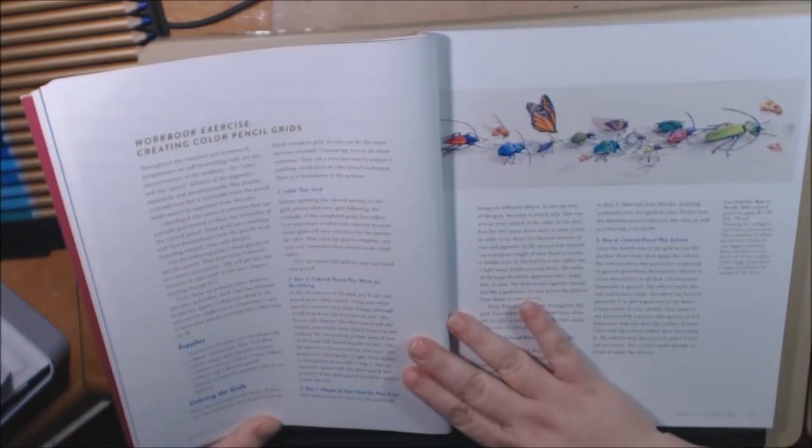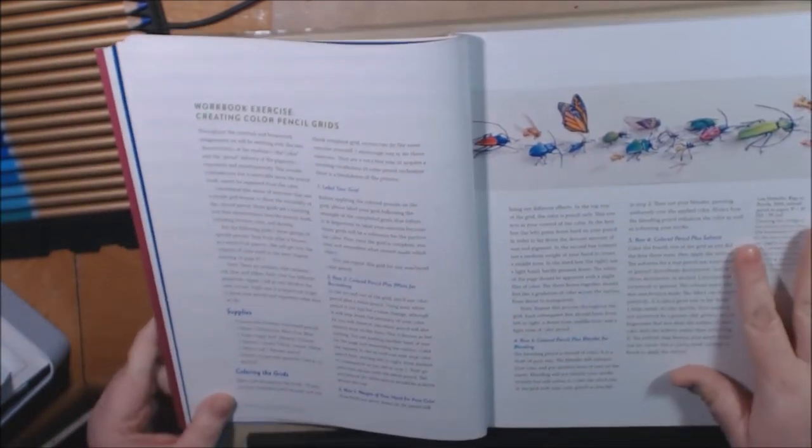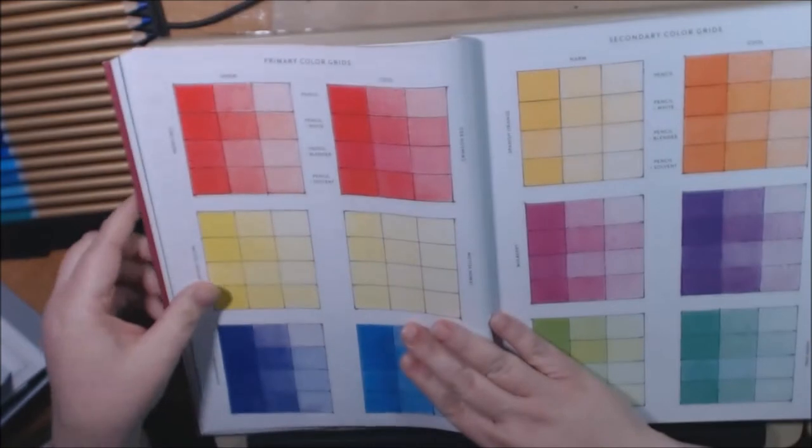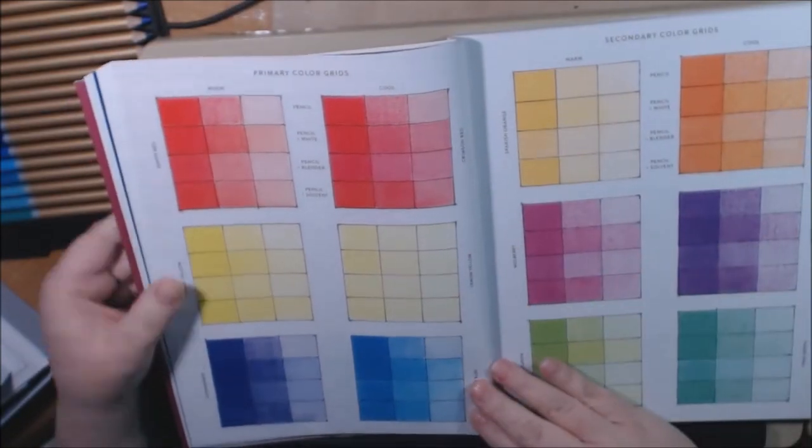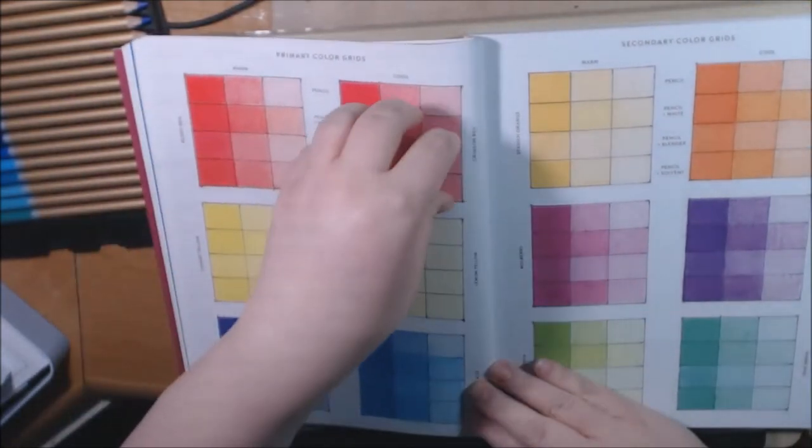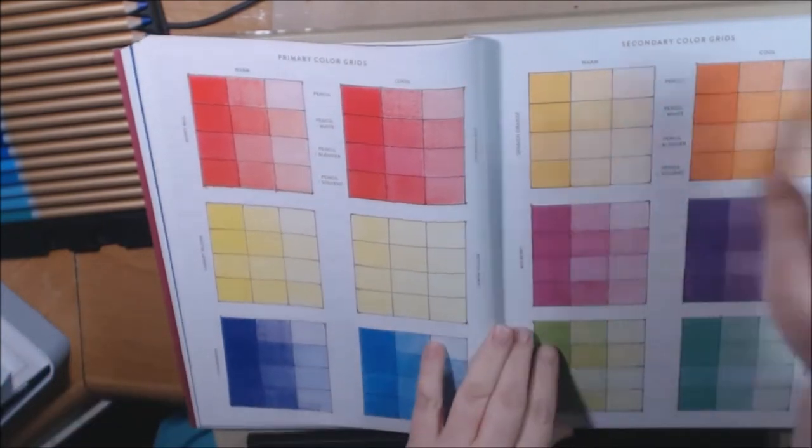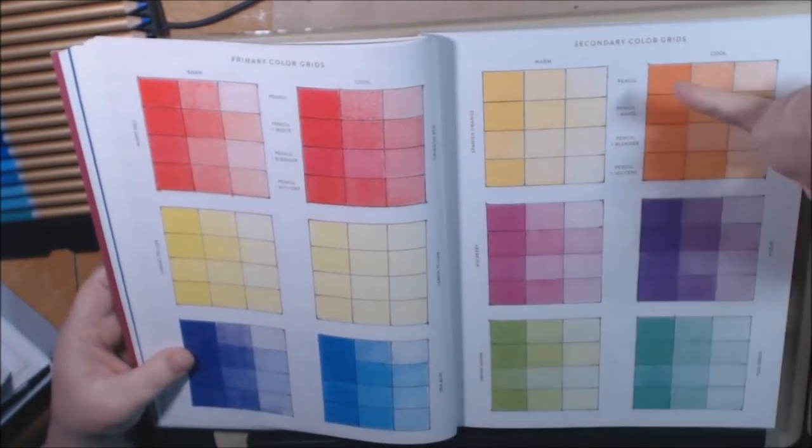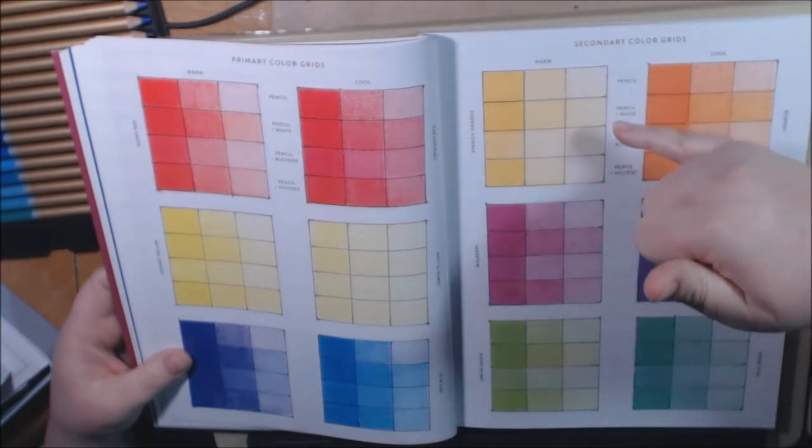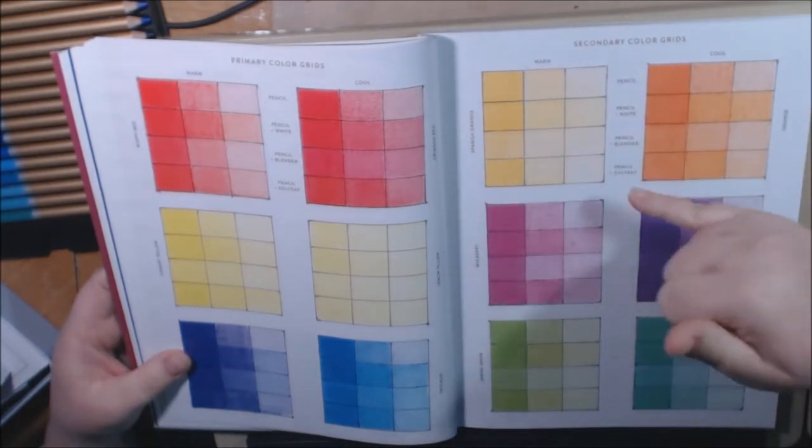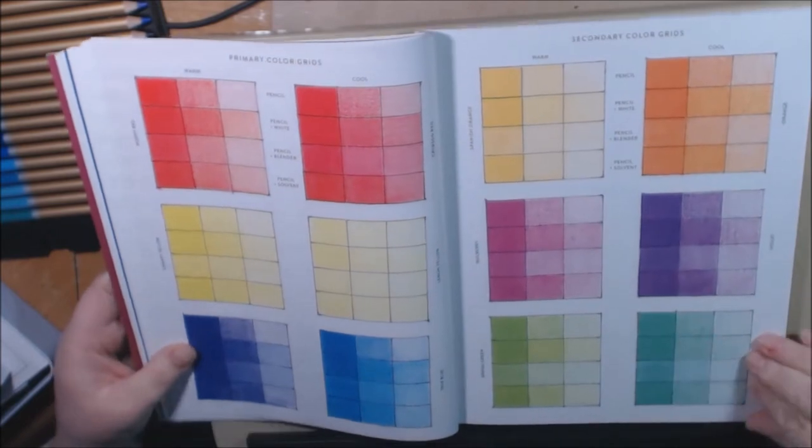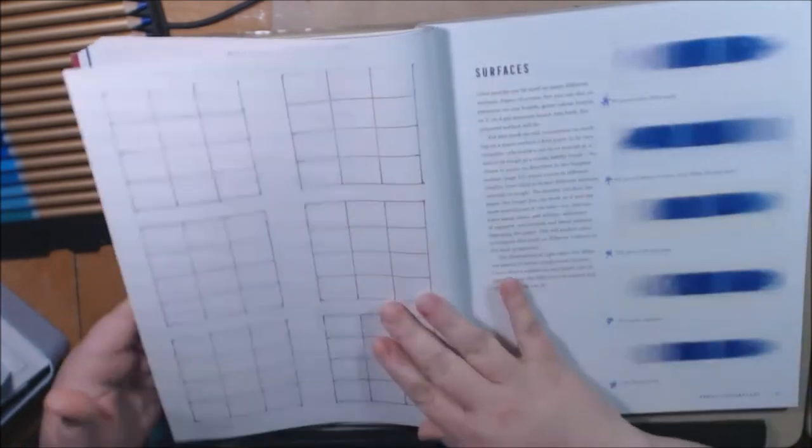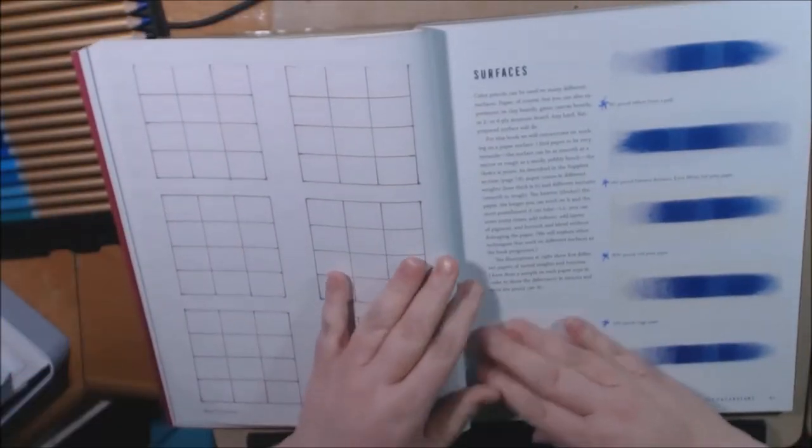For this chapter, it's creating colored pencil grids. And it tells you your supplies you need, what you want to do, why you want to do it. And then she goes in to show you all of the different types of grids. The red warm and cool, the yellow warm and cool blues, etc. And it just gives you an idea and tells you what they're going to look like. This is the pencil, the pencil in white, the pencil in the blender, and the pencil in the solvent on each one of them. And then she gives you, this is the primary, and this is the secondary colors. And then she gives you grids to test it out yourself.